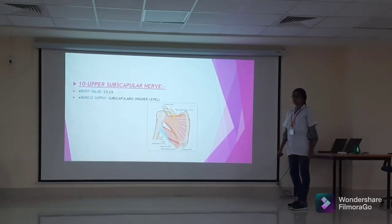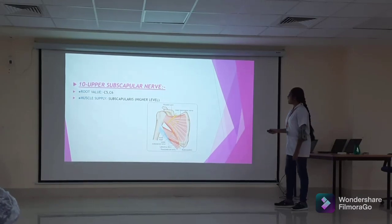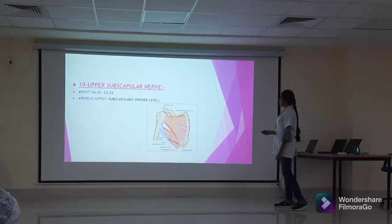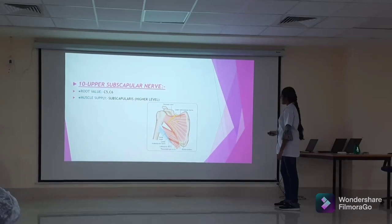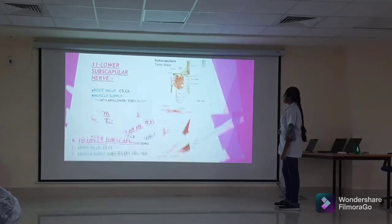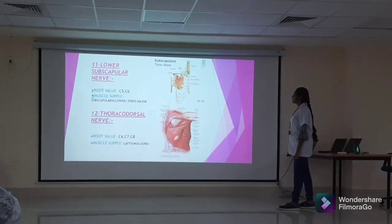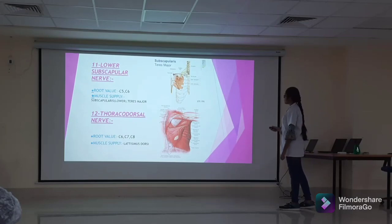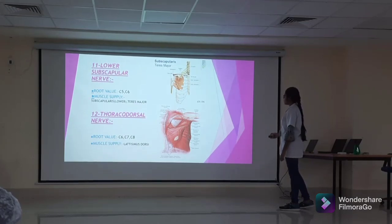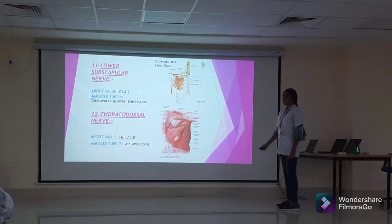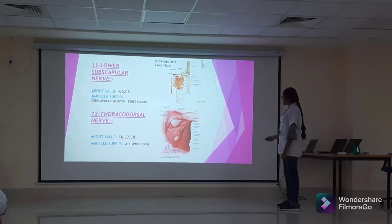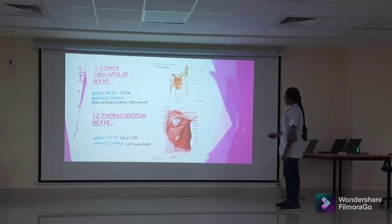Branches of the posterior cord include the upper subscapular nerve, which supplies the subscapularis at a higher level, and the lower subscapular nerve, which supplies subscapularis at a lower level and teres major. The thoracodorsal nerve supplies the latissimus dorsi muscle.